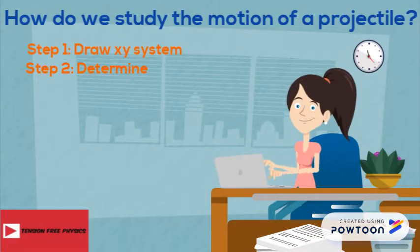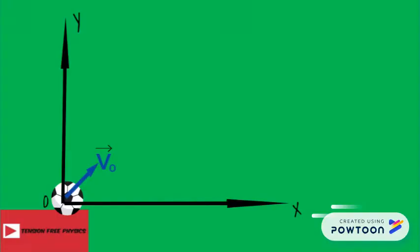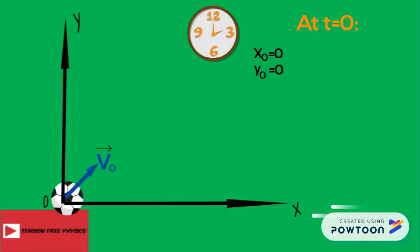Now let's move to step two, where we have to determine the initial conditions of the projectile. By the initial conditions, we mean the coordinates of the ball at the starting instant. So at t equals zero, x zero equals zero and y zero equals zero, because the ball is at the origin. Then the position vector r0 is also zero.